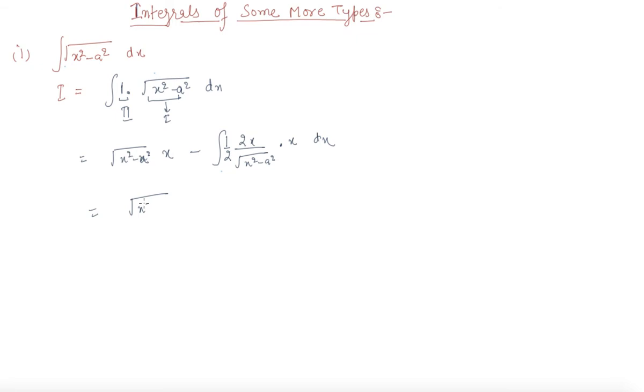What we are getting till now is x square minus a square x minus x square over x square minus a square dx.